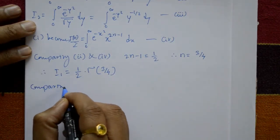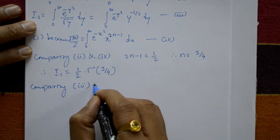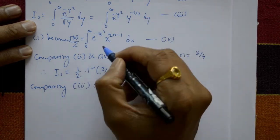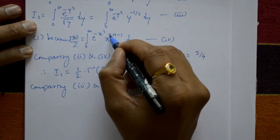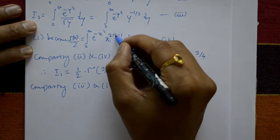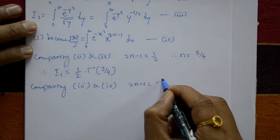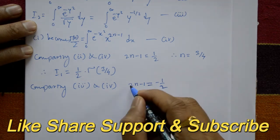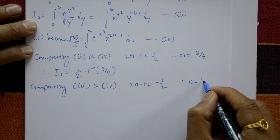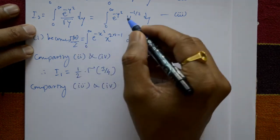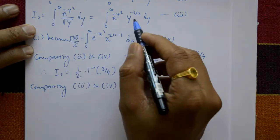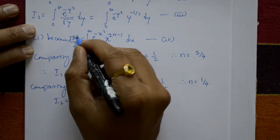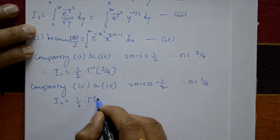Similarly, comparing equation number 3 and equation number 4: the integral limits are the same, and matching exponents gives 2n minus 1 equals minus 1/2. Shifting: 2n equals minus 1/2 plus 1, which is 1/2. Cross-multiplying by 2 gives n equals 1/4. Therefore I2 equals 1/2 times gamma(1/4).